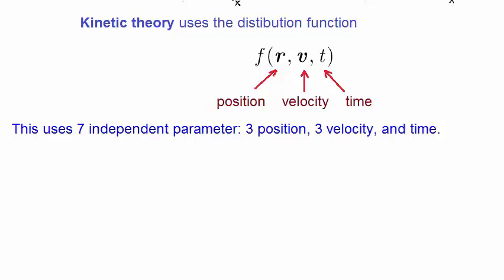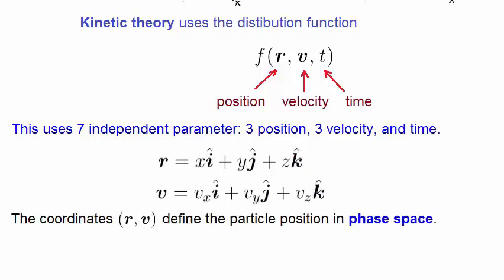The position vector is given by this, in Cartesian coordinates. But it can also be cast in spherical, cylindrical, or any other coordinate system. Similarly, the velocity component can be given by this. The two coordinate system defines what is called phase space.